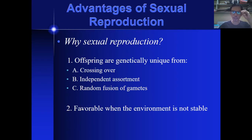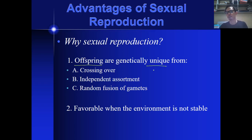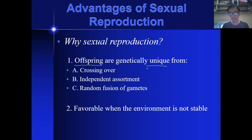What do we have right here are the advantages of sexual reproduction. So what makes this particular type of reproduction advantageous? Number one is the offspring are genetically unique from one another, meaning to say that the offspring here are too many, but not all of them are the same. Everyone is varied from another.